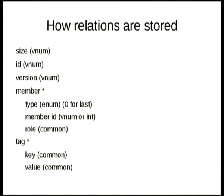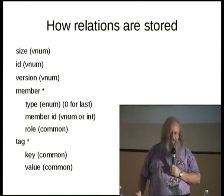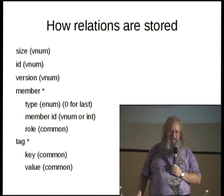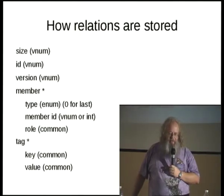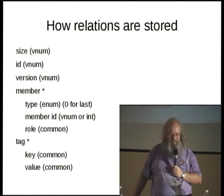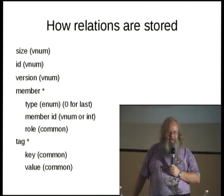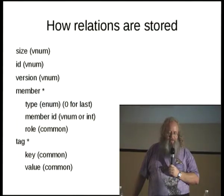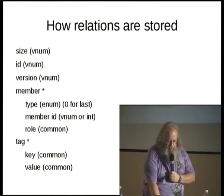Relations are a little bit more complicated. There's size, ID, version, and a list of members. The member type is stored as a byte: zero indicates this is the last member, one for node, two for way, three for relation. I'm using a full byte to store two bits of information, but I'm not trying to extract every last bit. The member ID is a vnum for ways and relations, or a 32-bit integer for nodes. The role is a common string, and tags are handled like the others.